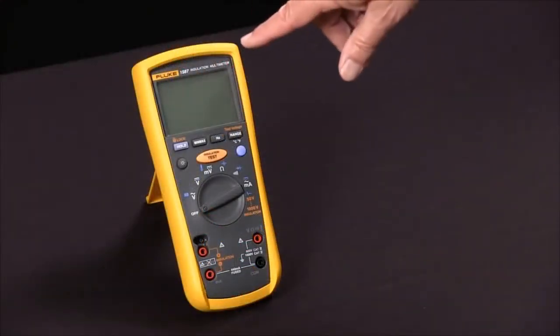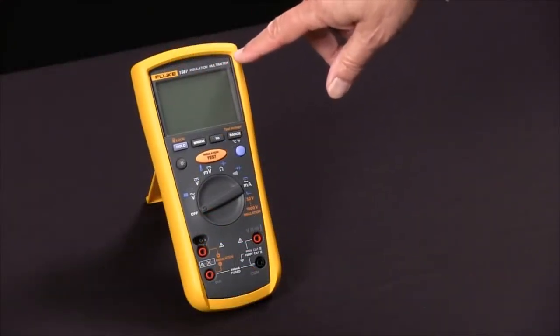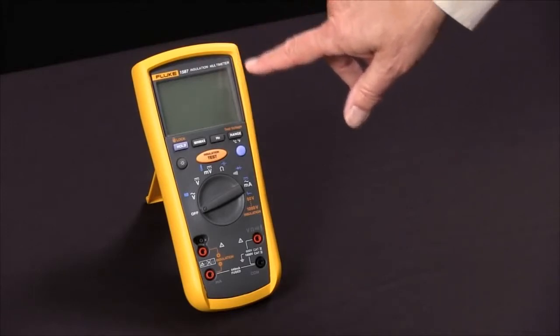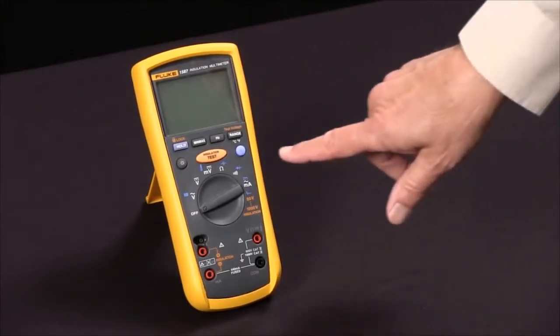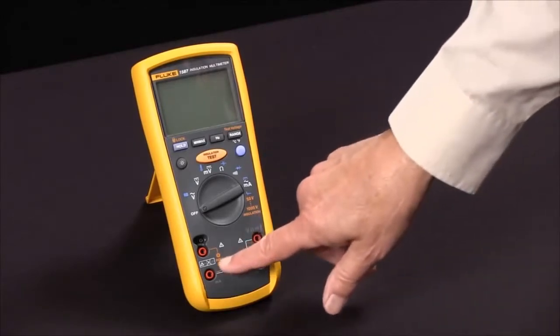To measure insulation resistance with our Fluke 1587 insulation multimeter, we first notice that the functions that relate to insulation resistance are all in orange.